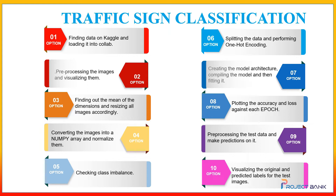Then we will convert the images into numpy arrays so we can mathematically compute and normalize them. An important step is to check whether the data is balanced — we will check for class imbalance. Then we will split the data and perform one-hot encoding on the target variable. One-hot encoding is really important because it prevents the data from getting prioritized.